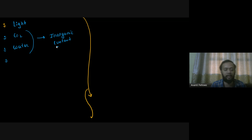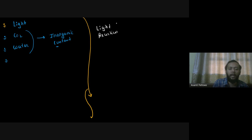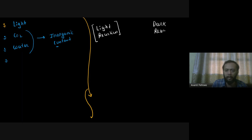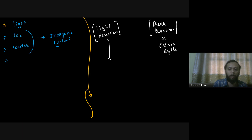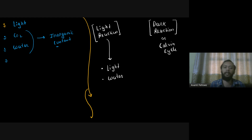Instead of dark reaction, you can use the term Calvin cycle. Photosynthesis has two parts: light reaction and dark reaction. In the light reaction, the ingredients you use are sunlight and water. Once the light reaction is complete, you get two products: ATP and NADPH.